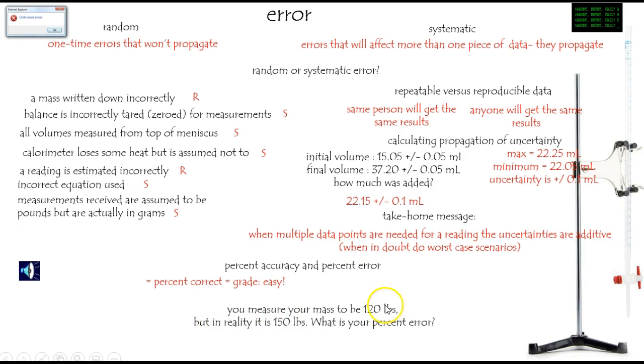You've measured your mass to be 120 pounds. Oh my god, it's really 150. What's your percent error? Well, it's a lot. It's 30 off of those 150, and that's 20%. But you know, why not just do it? First do the accuracy, and then the rest is error, right? You're 120 out of a possible 150. That's 80% accurate. But that means it's 20% error. Either way works fine. Okay, that's a little bit about error.